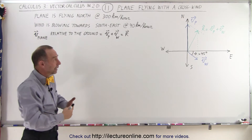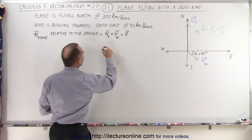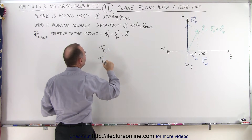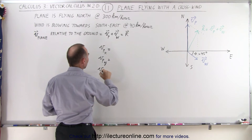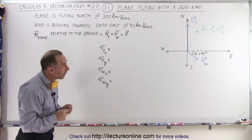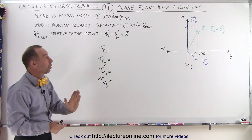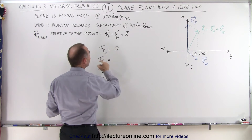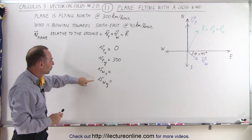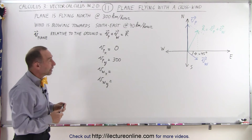To add the two vectors algebraically, we need to find the components of each vector. We need the x and y components of the plane's velocity and the wind's velocity. For the plane's velocity vector, there is no x component — the entire magnitude points in the y direction, so the x component is zero and the y component is 300 kilometers per hour.